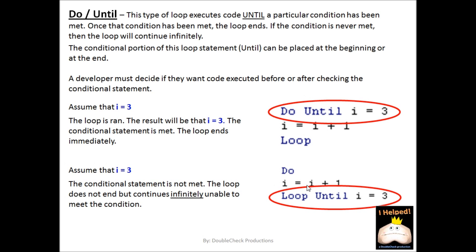The problem here is that our condition is never going to be met, meaning we'll continue adding one to the I value — so it's going to continue infinitely, and we are now stuck in an infinite loop. Depending on your variable, like if you have an integer value, it can only hold up to a certain amount. Once it hits that amount, you're going to get an overflow error. So that's one way to exit the loop — otherwise you might just be stuck in it perpetually.